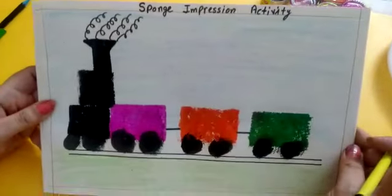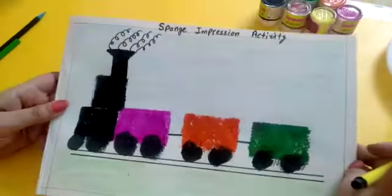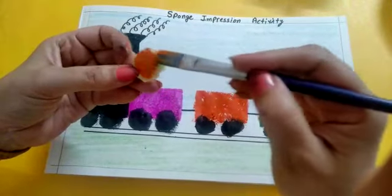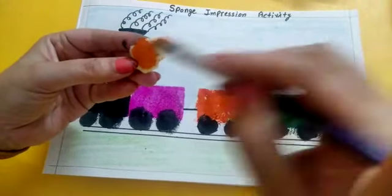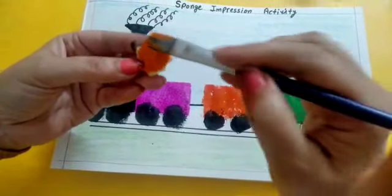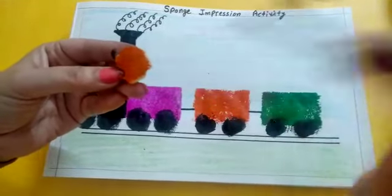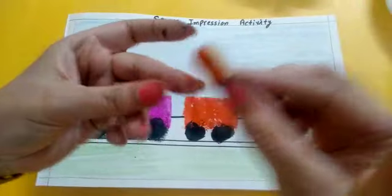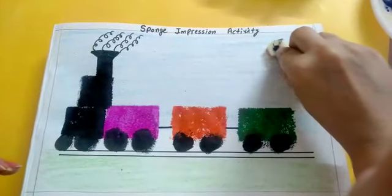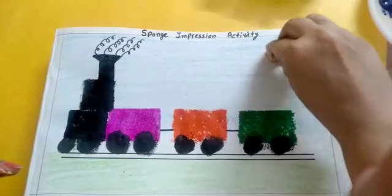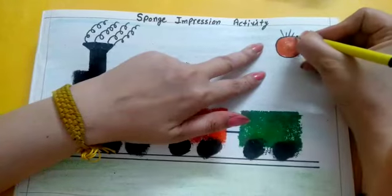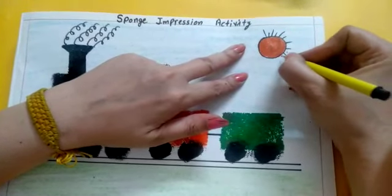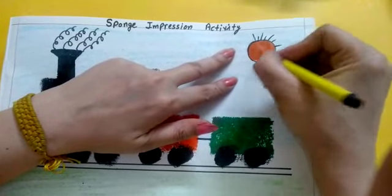So this is your train with this sponge. With this circle shape, I am also going to make a sun with this orange color. Its rays—sun rays—with black sketch.